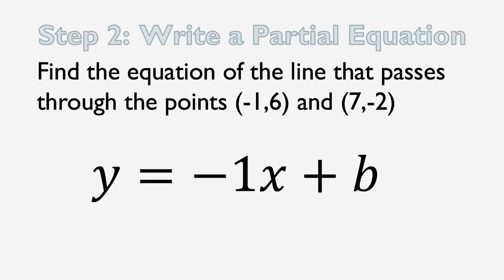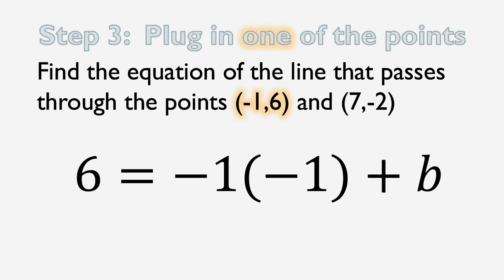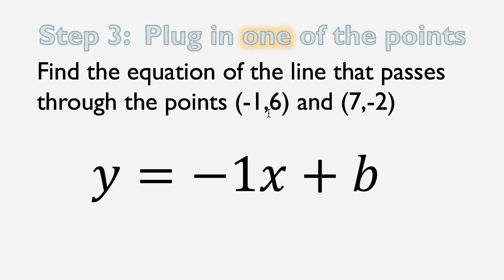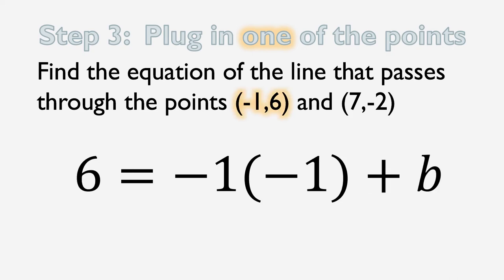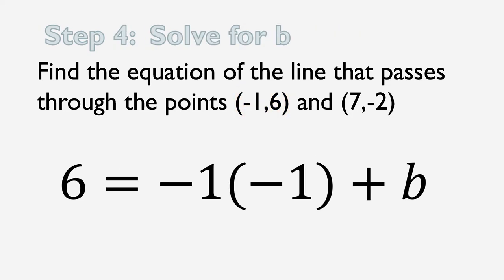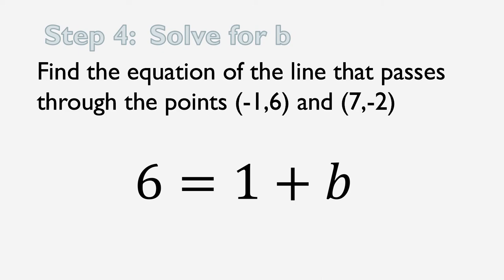Step 3, we're going to pick one of these points and plug it in. And here, I'm going to pick this point negative 1 comma 6. Because if x is negative 1, and I do negative 1 times x, that will be negative 1 times negative 1, and that will produce a positive. And I'd always prefer to deal with positives whenever possible. So we'll plug that in. 6 equals negative 1 times negative 1 plus b. So 6 equals 1 plus b. And b is going to be 5. Because 1 plus 5 is 6.